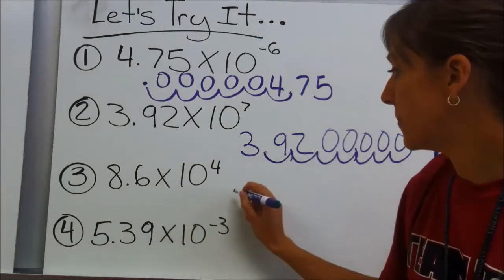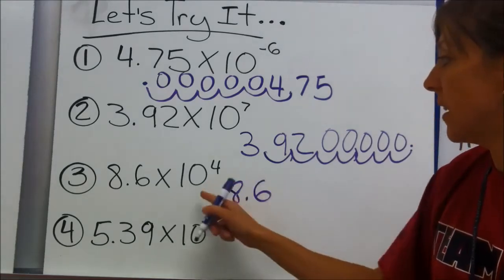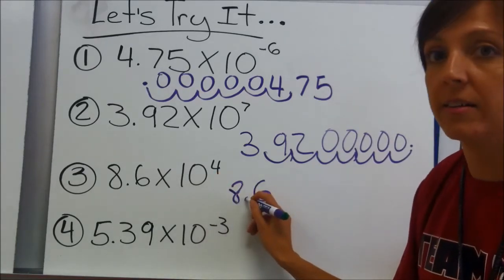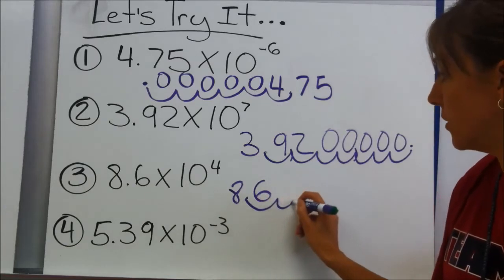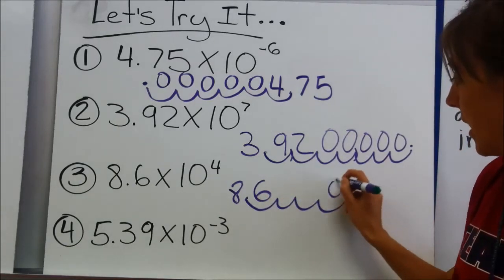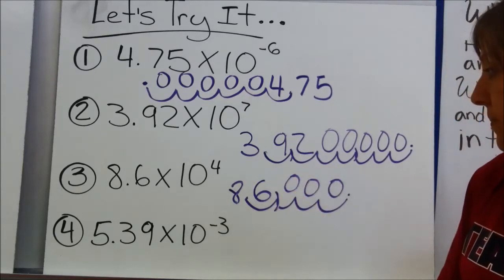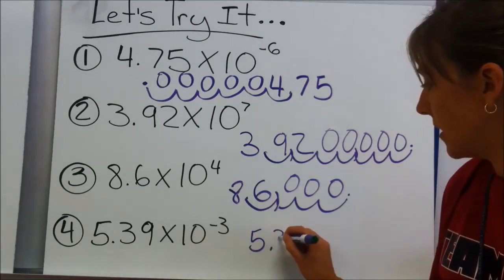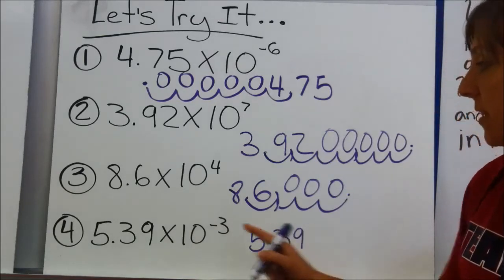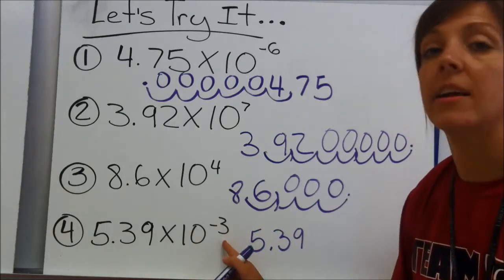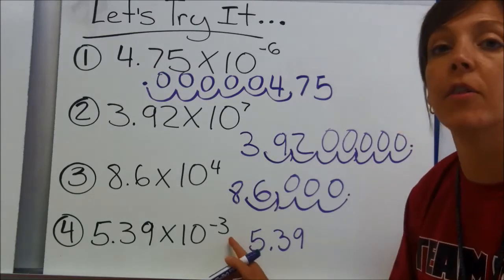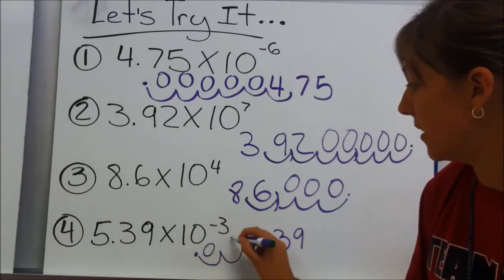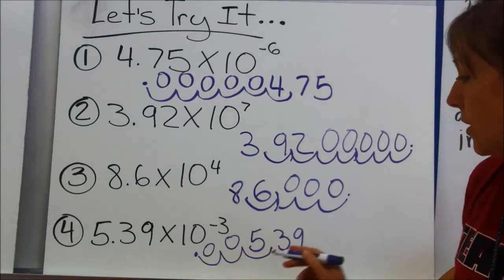The next number, number 3: 8 and 6 tenths times 10 to the fourth power. I have a 4 here and it's positive, so I'm going to move to the right and move just 4 spots: 1, 2, 3, 4, and fill in the place value spots. Put a comma. And for the last one, number 4: 5 and 39 hundredths times 10 to the negative third. So that's a negative 3 — I'm going to move 3 places to the left: 1, 2, 3. Put my decimal here, fill in these spots with 0's, and this is my new number.